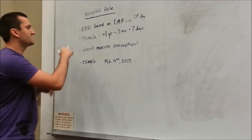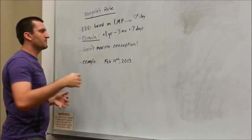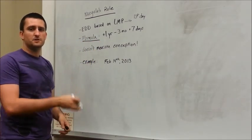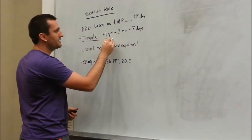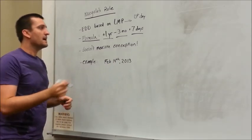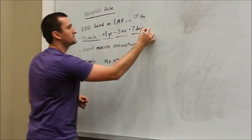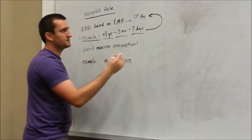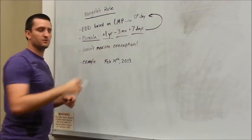Now, it's got a formula to it. Really, just add a year, subtract three months, add seven days. So add a year, subtract three months, and then add seven days. When are we adding this to? This will all be based on the very first day of her last menstrual period.